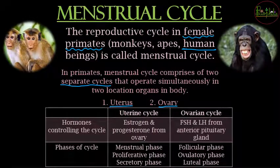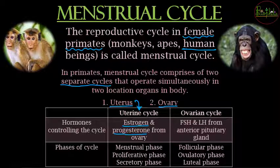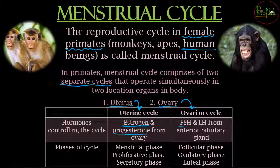The uterine cycle is controlled by hormones estrogen and progesterone, which are released from the ovary because of the temporary endocrine gland — the corpus luteum. The ovarian cycle is controlled by FSH and LH, which are released from the anterior pituitary gland. Now, what are the phases that occur during the entire uterine cycle?